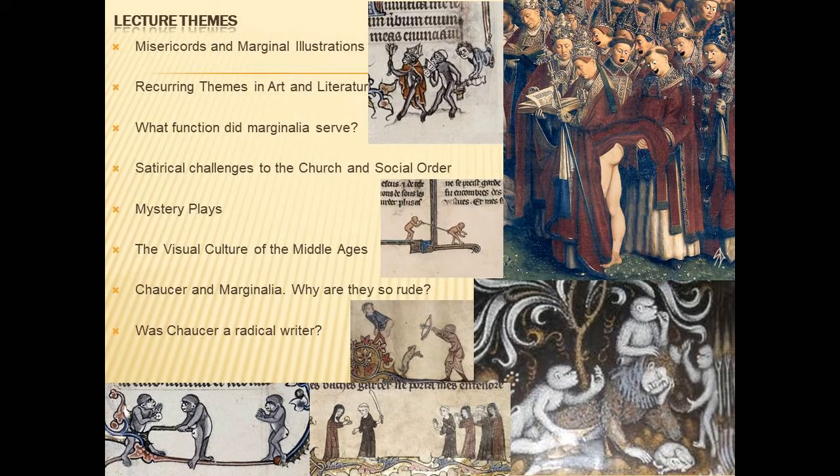This brings us to the lecture themes of today. We're going to talk about misericords and marginal illustrations, certain recurring themes in art and literature. We'll explore some interpretations of what function the marginalia served — are they satirical challenges to the church and social order, or do they operate alongside these things? We'll talk about mystery plays a little bit, and we'll look at Chaucer and the marginalia, and whether we think Chaucer was a radical writer.